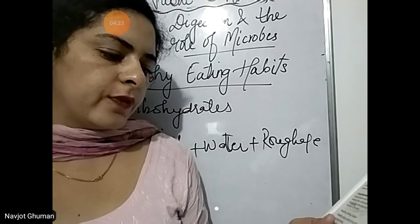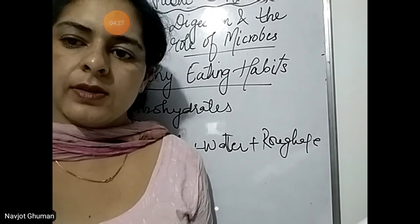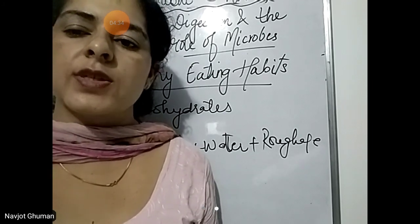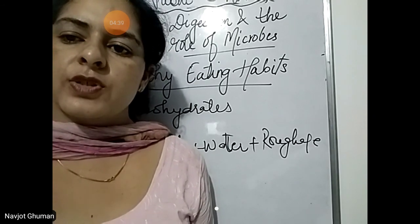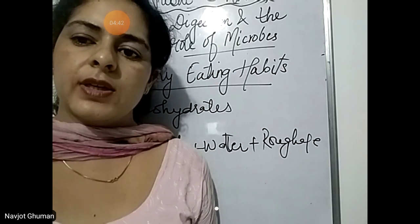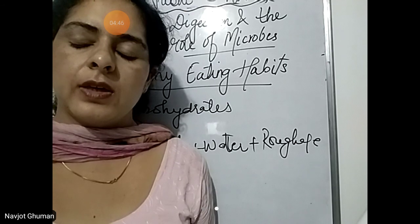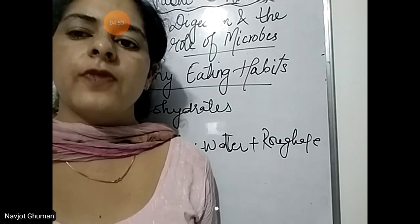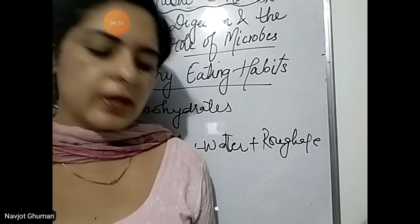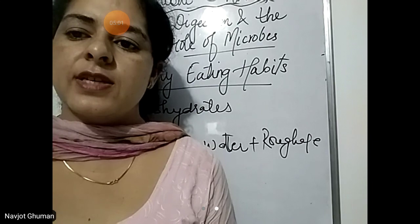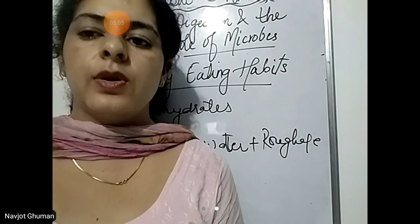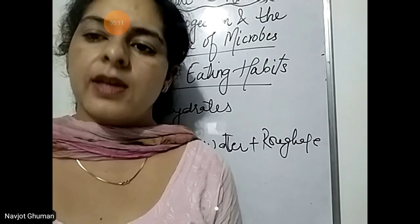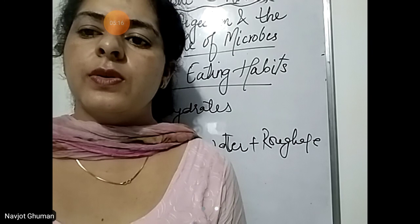Always eat clean, fresh, and well-cooked food. Never keep your food uncovered — keep it covered always. Always eat fresh food; don't eat stale food. Stale food means food that is kept for a long time. Suppose you cooked something and you keep it in the refrigerator for one or two days — eating it after two days is not okay for your health. Well-cooked means you should cook it first and then eat it, because during cooking whatever germs or microbes are present are killed and your food becomes safe to eat.